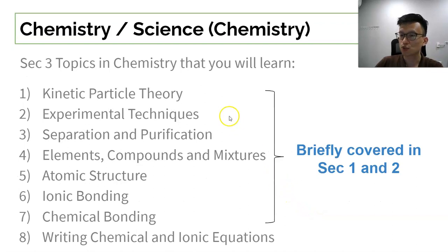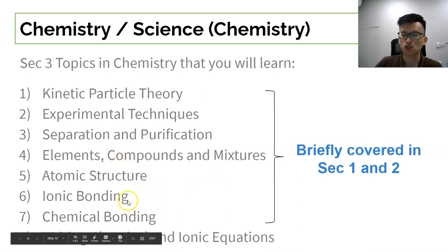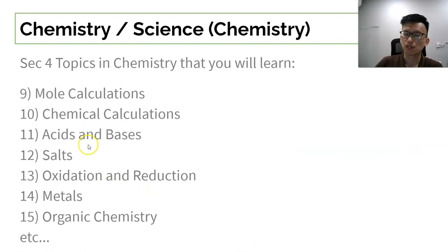The Sec 3 topics in chemistry include the particulate nature of matter, experimental techniques, how to separate things, element compound mixture, atomic bonding. Many of these things are covered in Sec 1 or Sec 2. When you move to Sec 4, some of these things are very new. You'll learn more in detail concepts that are built up from lower secondary science content.